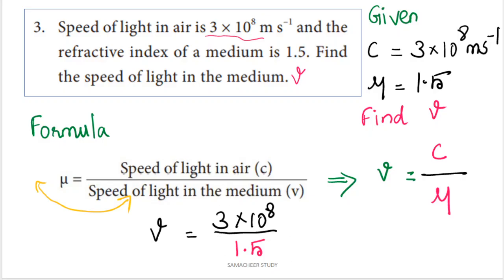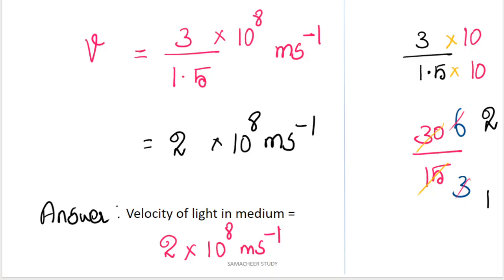To handle the decimal, multiply numerator and denominator by 10: 30 divided by 15, which simplifies to 2. So the velocity of light in the medium equals 2 × 10⁸ m/s (meter per second). That is the answer.